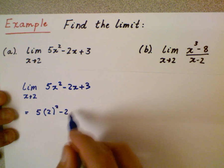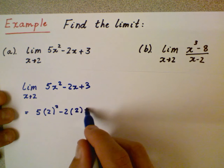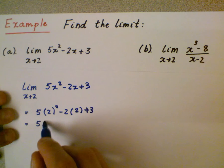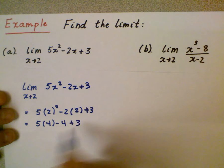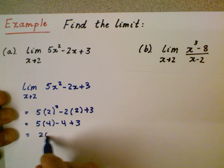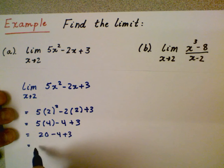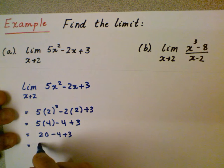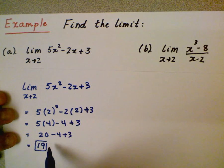Wherever we see an x, we're directly substituting in for x with 2. So I have 5 times 2² which is 4 minus 4 plus 3. So 20. I'll just go ahead and do the algebra here. 20 minus 4 plus 3. So that ends up being 19. So the limit as x is approaching 2 of this function is going to be the value 19.